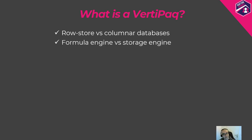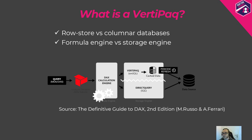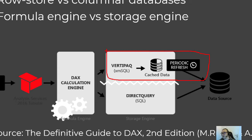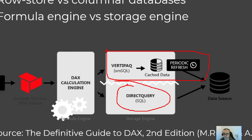Another important distinction is the difference between the Formula Engine and the Storage Engine, as illustrated in the definitive guide to DAX by Marco Russo and Alberto Ferrari. The Formula Engine accepts the request, processes it, generates the query plan, and executes it. The Storage Engine pulls the data out of the tabular model to satisfy the request. It works in two different ways: VertiPaq, which keeps a snapshot of the data in memory that can be refreshed periodically, and DirectQuery, which doesn't store any data and forwards the query straight to the data source for every single request.